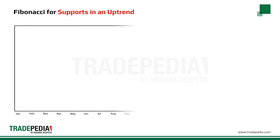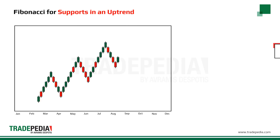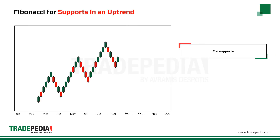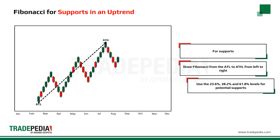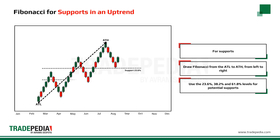Finding supports in an uptrend using Fibonacci: draw Fibonacci from the all-time low to the all-time high, always from left to right. Use the 23.6%, 38.2%, and 61.8% levels as potential supports.